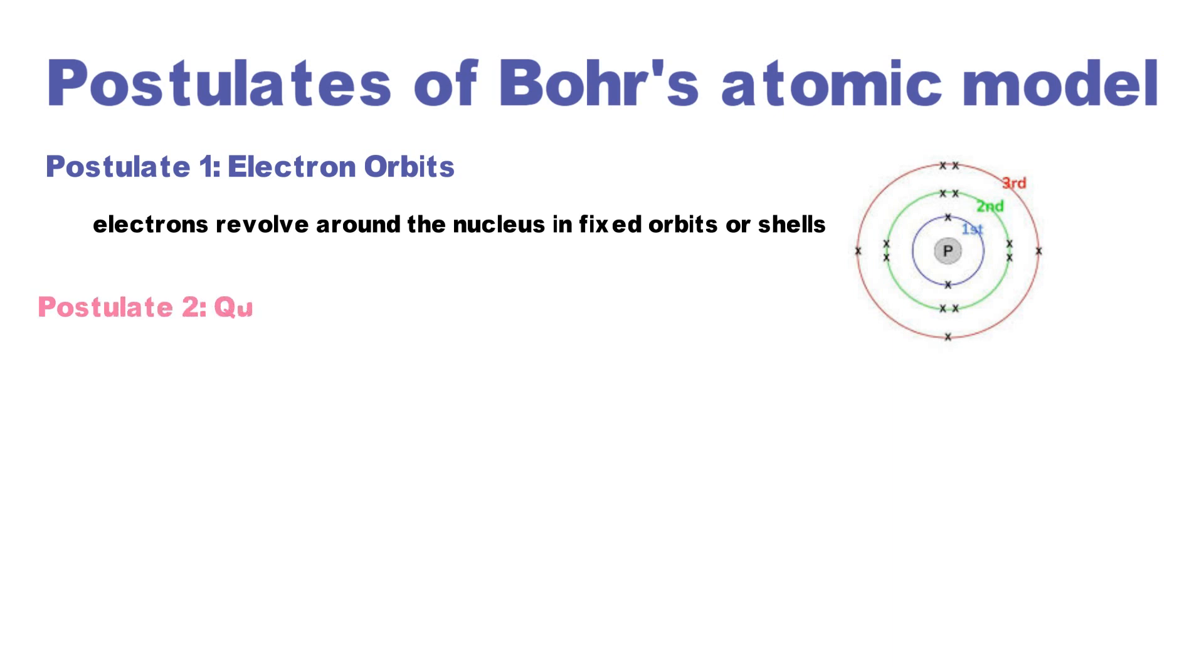Electrons in an atom have quantized energy. They don't spiral into the nucleus because they can only exist in specific, stable energy levels. When an electron jumps from a lower to a higher energy level, it absorbs energy, and when it falls back, it emits energy as light.